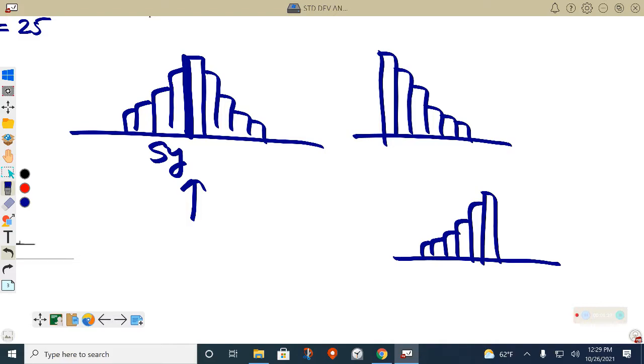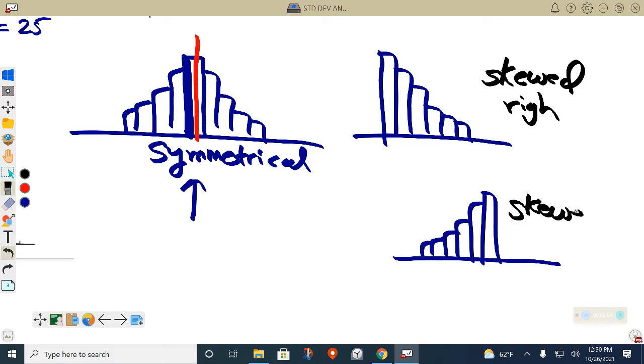Right now you're not writing anything down yet. Don't write anything down, just pay attention. Symmetrical histograms are when the bars on the left and right side are like mirror images. You can kind of split it in half and the left and right side are the same.